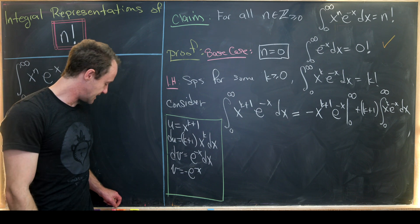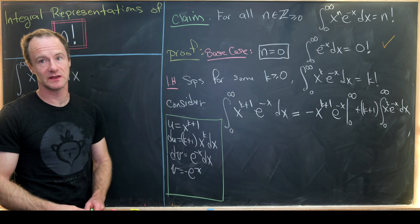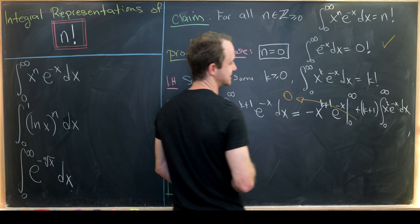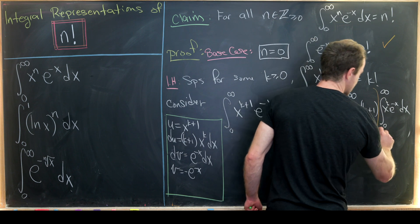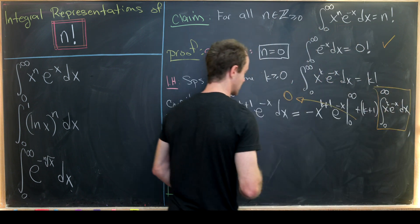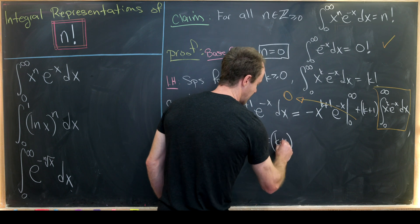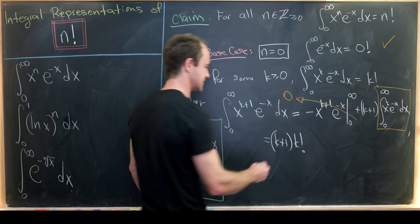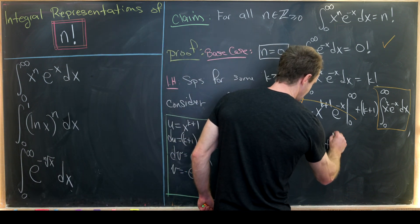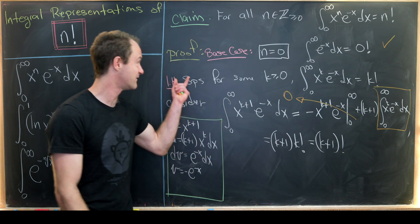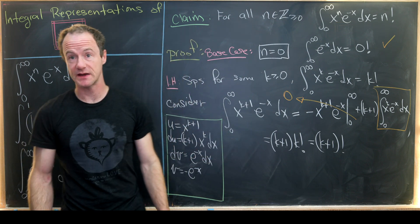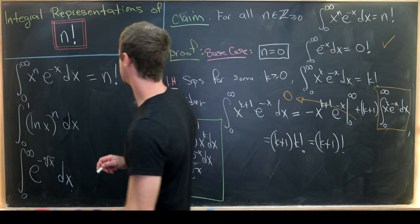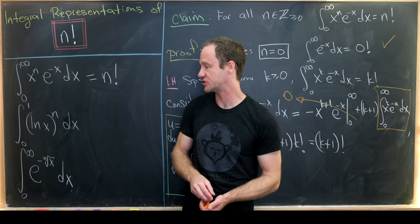Using standard limiting techniques, which we'll skip here, the boundary term trends to zero. Applying the induction hypothesis to the remaining integral, we get k plus one times k factorial, which is of course equal to k plus one factorial. That finishes the proof by induction and tells us this integral equals n factorial for all non-negative integers n.